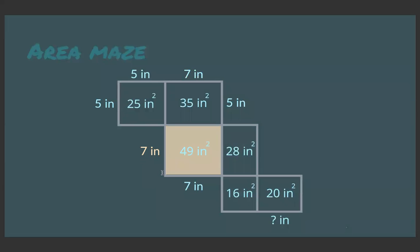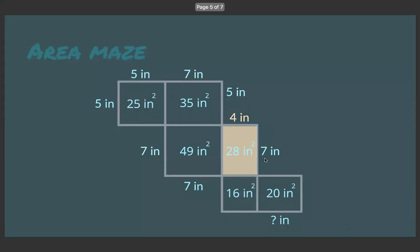So are you starting to catch on how to solve these? So this 7 for the height right there is the same as over here next to the 28. And 7 goes into 28 4 times. 7 times 4 is 28.